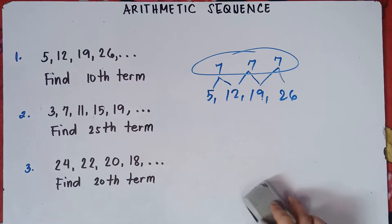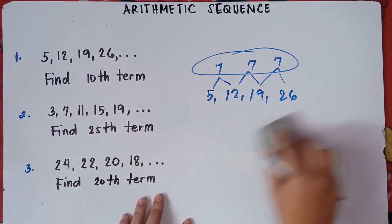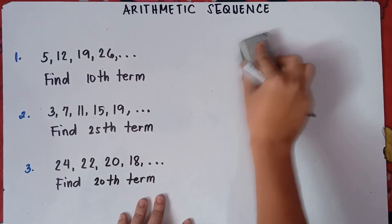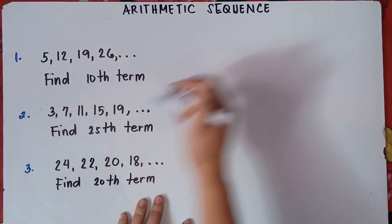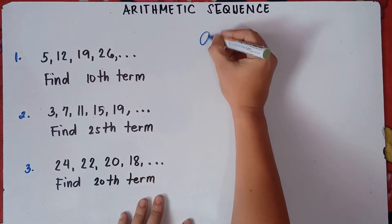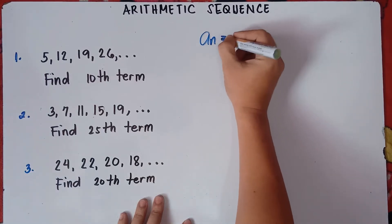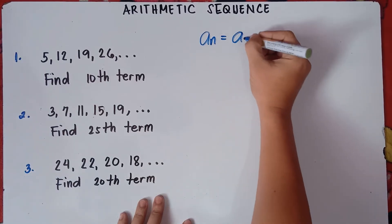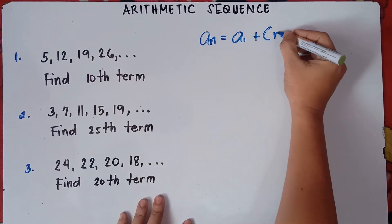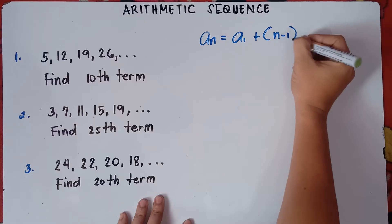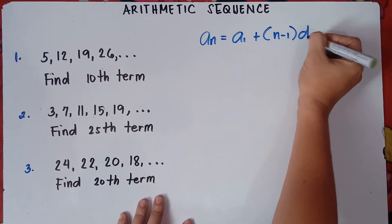The formula for arithmetic sequence is: a sub n equals the first term plus (n minus 1) times the common difference. Here, a sub n is the term we're looking for — the general term — and n is the number of terms.